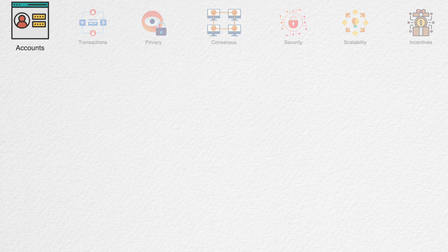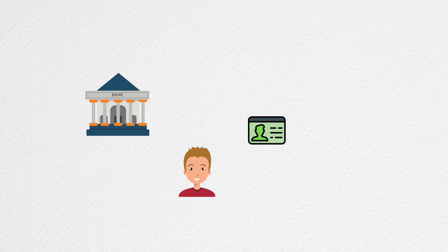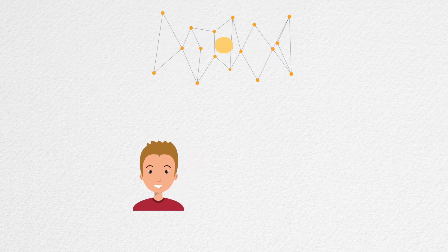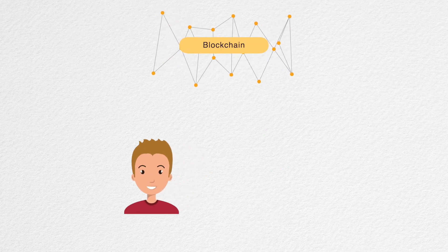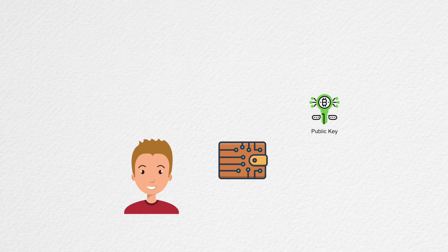Any financial system starts with the concept of accounts where users can save funds. With the traditional system, this is easy — you go to the bank to open an account and they give you a unique account number. You can receive payments using this number and get a password to authorize payments. With blockchain, people generate their own accounts using a piece of software called a wallet, and you don't even need an internet connection to generate new accounts. These accounts are made up of a public key and a private key.